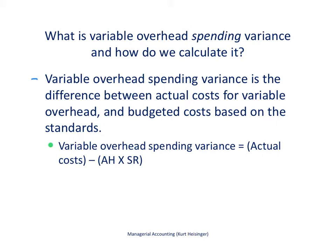The variable overhead spending variance is the difference between the actual costs for variable overhead and the budgeted costs based on standards. It is calculated by taking actual costs and subtracting the budgeted costs based on standard — that is, the actual direct labor hours times the standard variable overhead rate per direct labor hour. Using direct labor hours to allocate variable overhead is very common for companies.